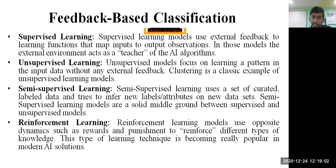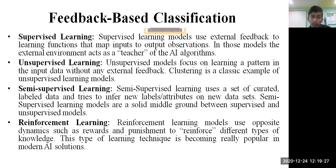Unsupervised learning focuses on learning a pattern in the input data without any external feedback. There is no supervisor; it only provides input, and the algorithm needs to understand the patterns in the data and accordingly design the decision and give some output. The best examples of unsupervised learning are clustering and association, as discussed in the previous session.